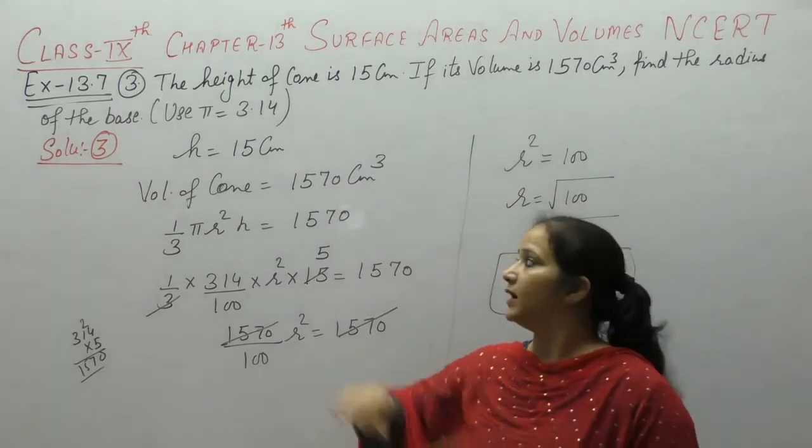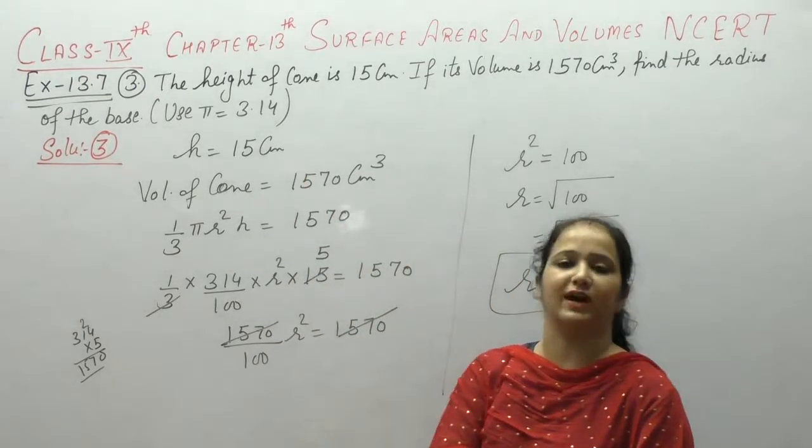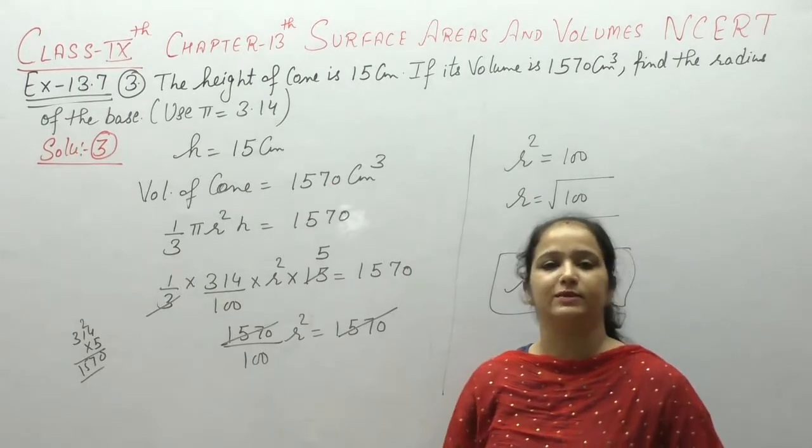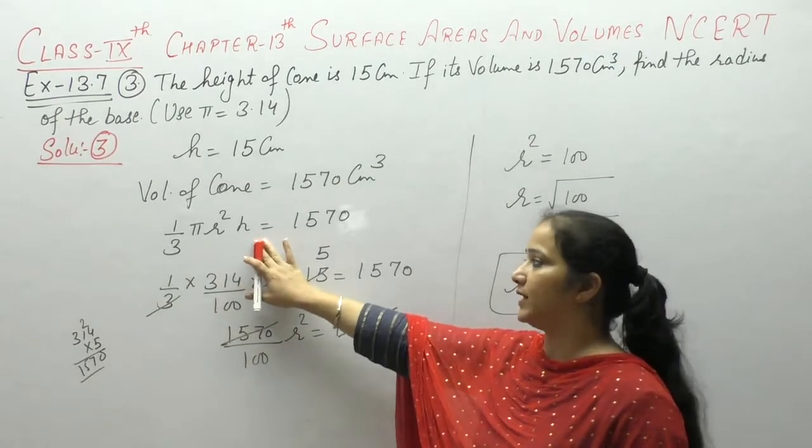Again, height given hai 15 cm, volume of the cone given hai 1570 cm cube. Volume of cone ka formula use karengi, 1 by 3 pi r square h.